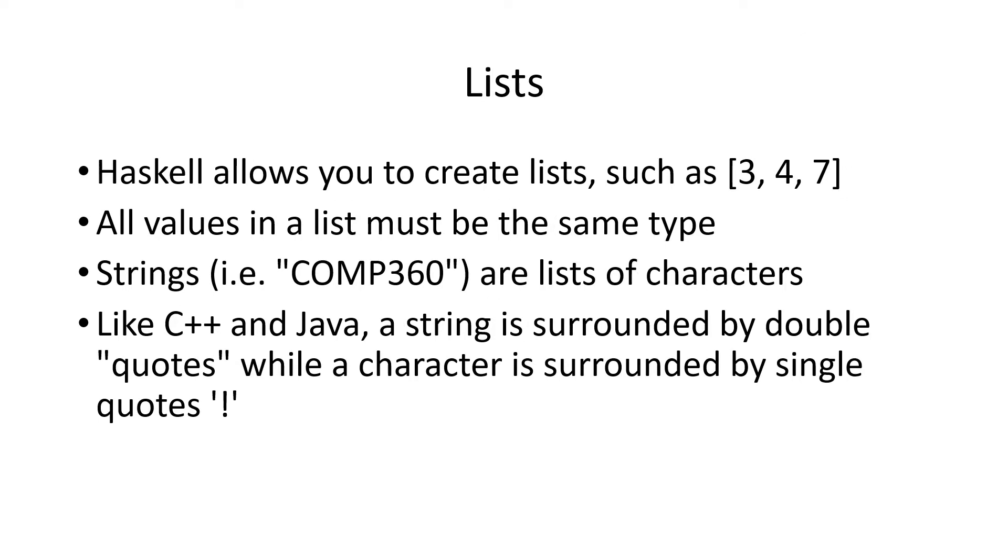Haskell uses lists as one of its primary data structures. Lists are created with square brackets. Note that the square brackets do not indicate an array. They are the elements of a list. All the elements of a list have to be the same type. They can all be numbers, they can all be letters, but they all have to be the same thing.